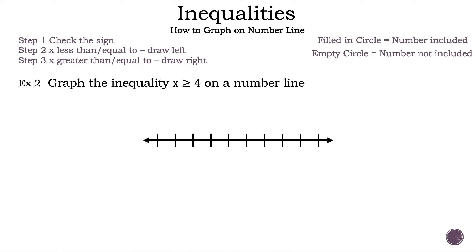Let's move on to example 2. Now let's read the question: Graph the inequality x greater than or equal to 4 on a number line. We already have our number line. Let's add some numbers — just make sure 4 is on there somewhere. Now we need to circle 4. Are we going to have a filled-in circle or an empty circle? That's right, a filled-in circle, because we have greater than or equal to — or specifically, or equal to. Since x is on the left side and we have greater than or equal to, we draw our arrow to the right.